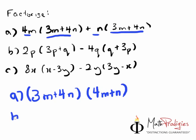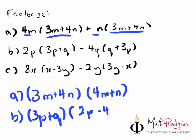For part B, the answer is 3P plus Q, because it's the same thing. Or if you want to write Q plus 3P, it's up to you. And the whole thing, the other bracket, is 2P minus 4Q.